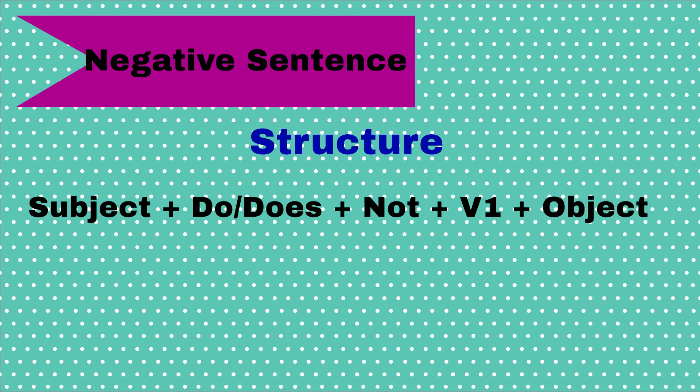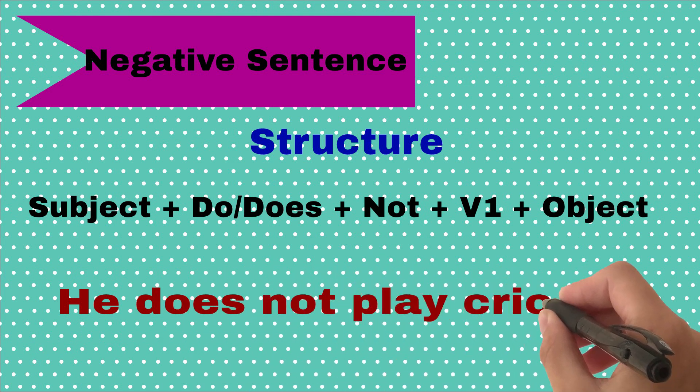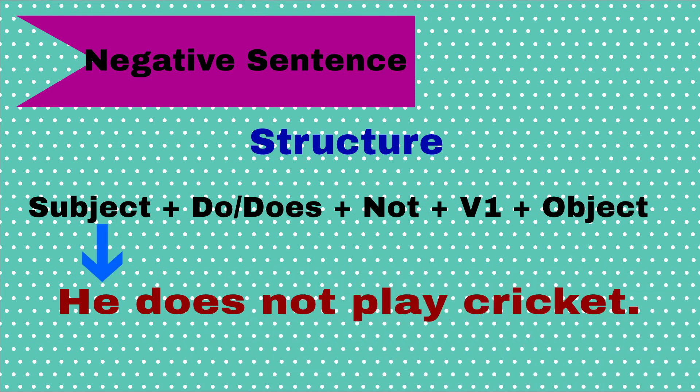For example: He does not play cricket. In this example, he is a subject. Then we use does as a helping verb. Then we add not for negation. Then comes the first form of verb play, and cricket is object.